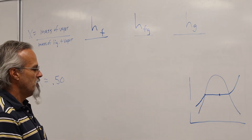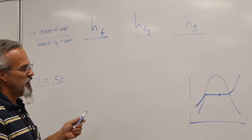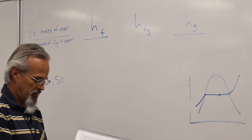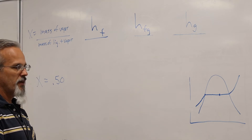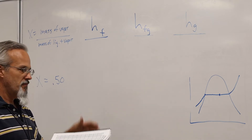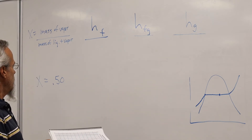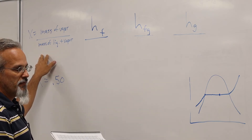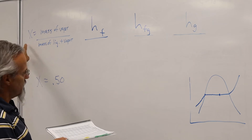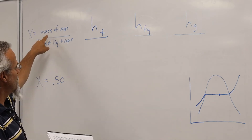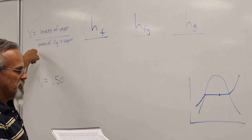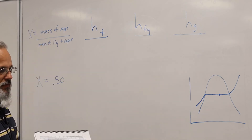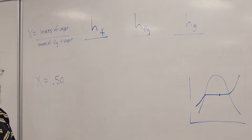So if we are at some in-between state and we want to calculate the total enthalpy of the system for that particular state point, we would use the steam quality factor, given the symbol X — it's going to be the mass of the vapor divided by the mass of the liquid and vapor phases total. So it's going to be some fraction less than 1.0.